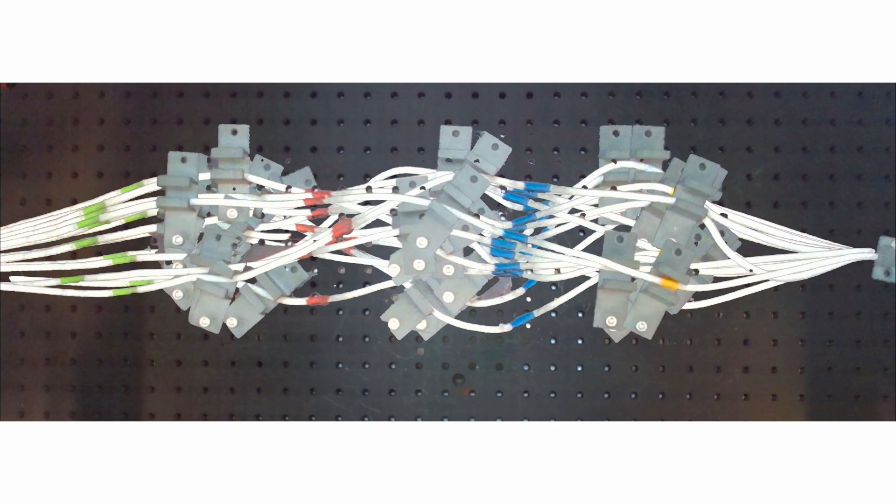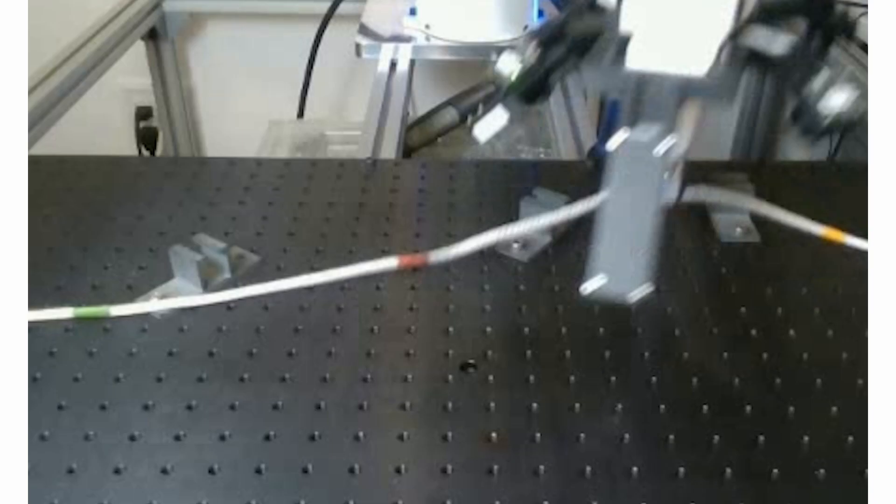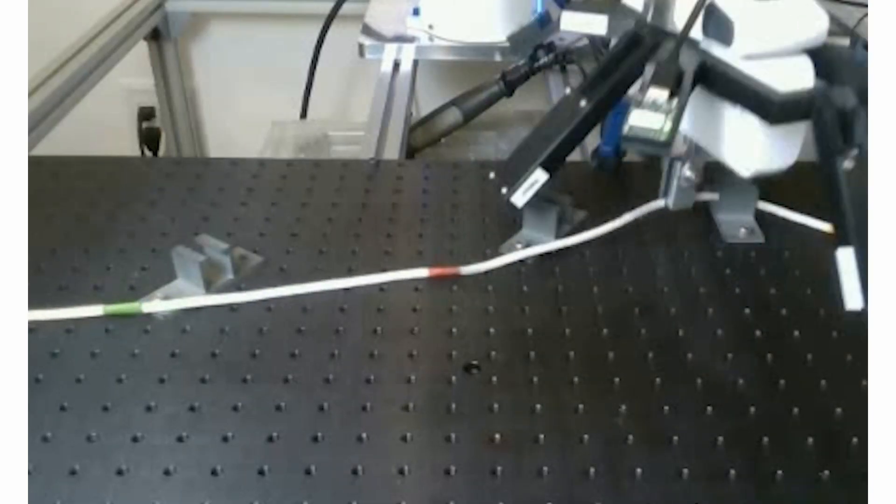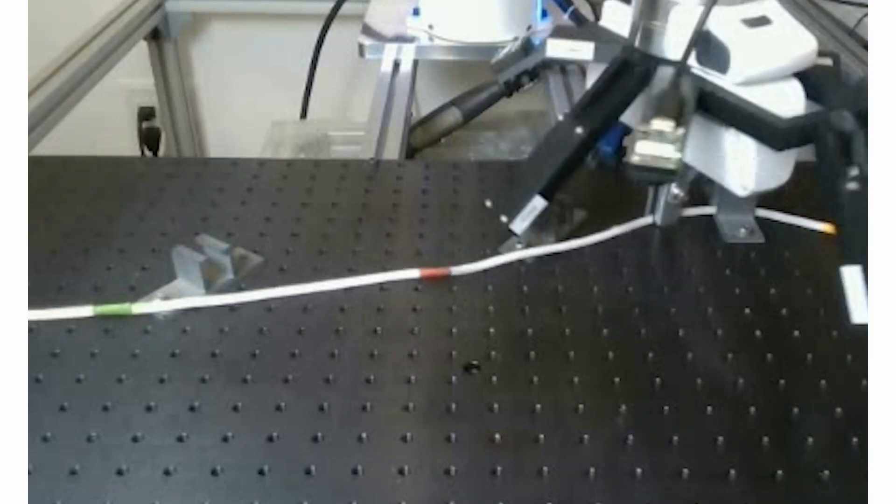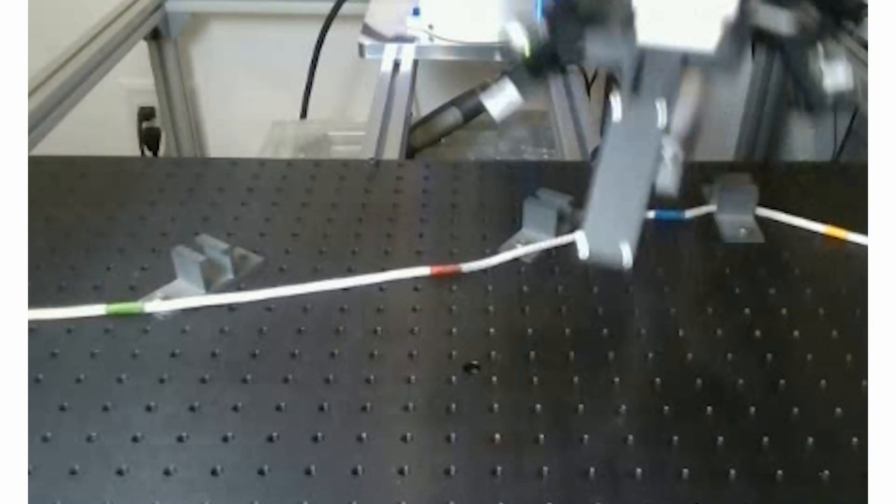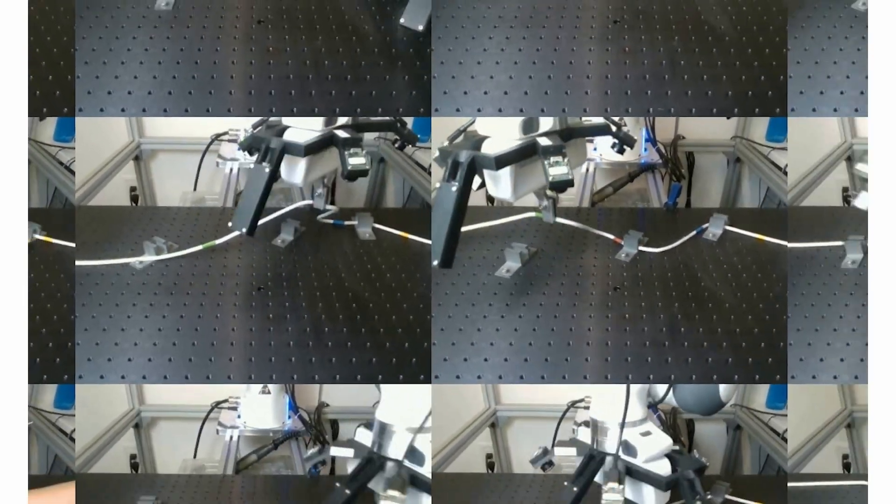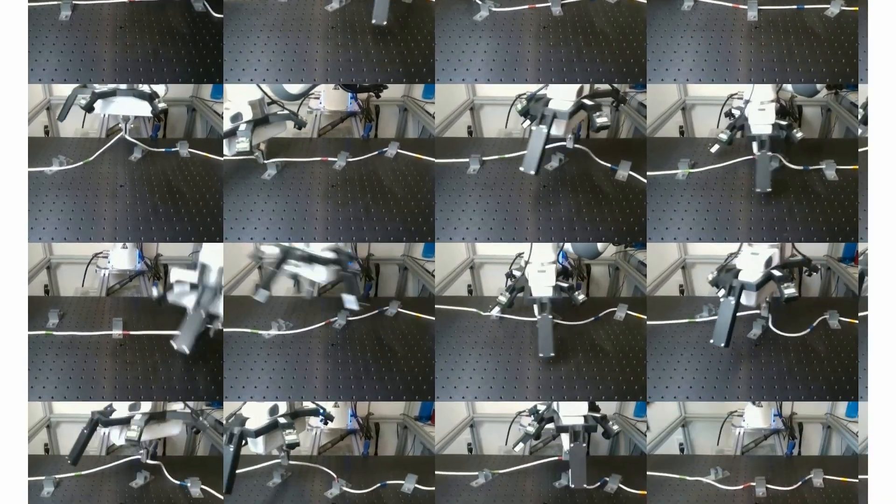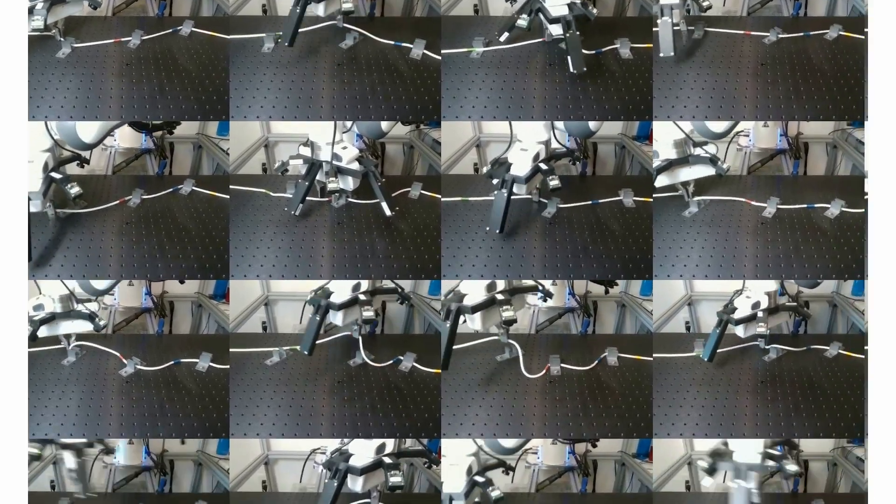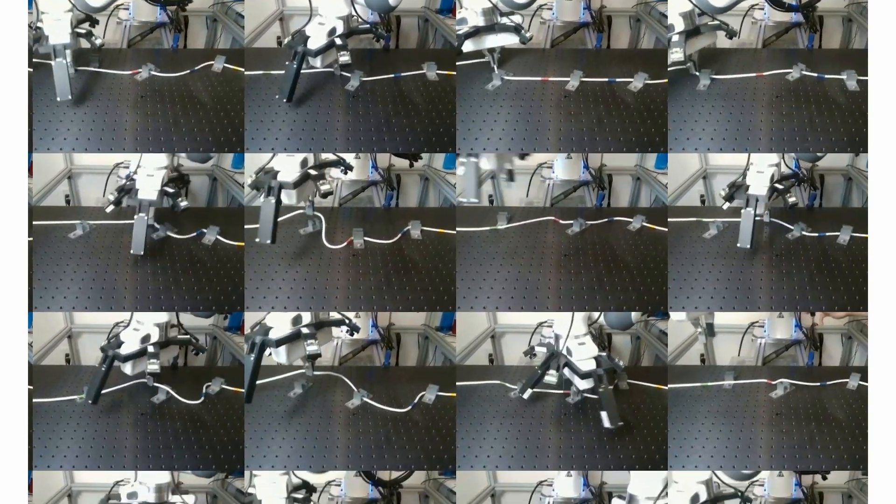This task reflects many of the difficulties that real-world cable routing presents to robots: intractable modeling of the interaction between the deformable cable and rigid objects, a high degree of precision required in securing the cable, and the long horizon nature of the task, creating problems in generalizability.